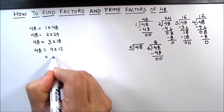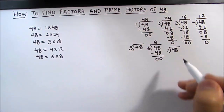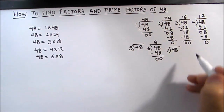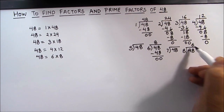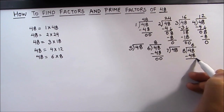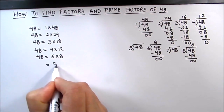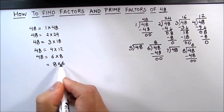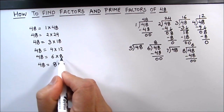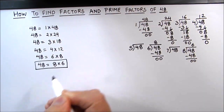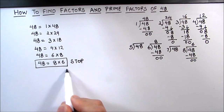Next we'll divide 48 by number 7. 7 is not a factor of 48. Next we'll divide it by 8. 8 times 6 is 48, giving us two factors: 8 times 6. Now here we see that the factors are getting repeated — we already got 6 times 8 in our previous division. As we are getting repeated factors, we are going to stop the division.